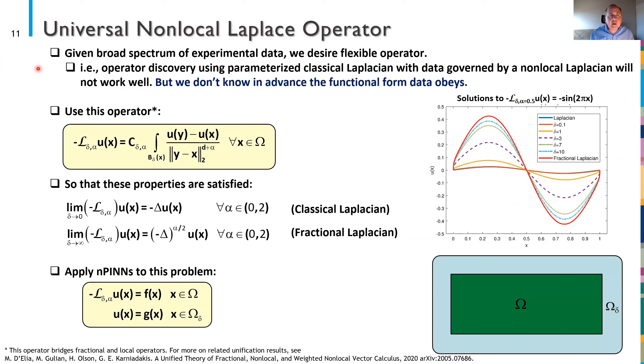And the reason I want to do that is the following. Given what potentially is a very broad spectrum of experimental data I'd like to fit that against a very general operator. Just to give a straw man example, if I assume that my operator is a classical Laplacian and I try to train a neural network on data that is coming from a non-local Laplacian this isn't going to work well. I'm not going to be able to train that very accurately. But I don't know in advance the functional form of the data or operator. So I'm going to simply train or impose a very general form of an operator.